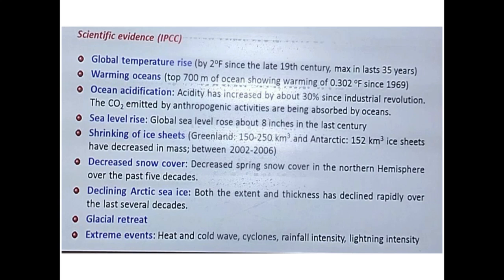Declining Arctic sea ice is another scientific evidence. Both the extent and thickness of Arctic ice have declined rapidly over the last several decades. This is a clear indicator that the world is facing a significant climate and environmental problem.